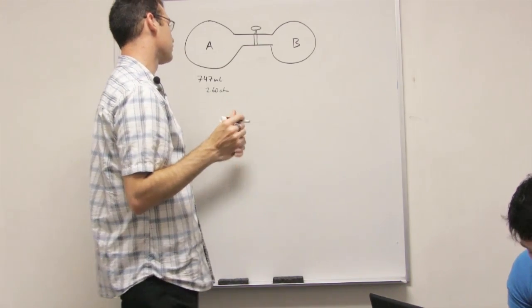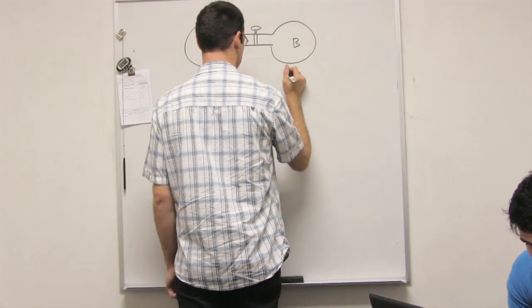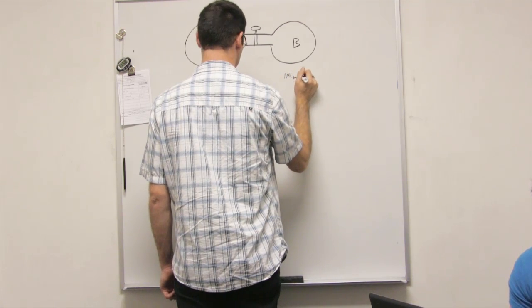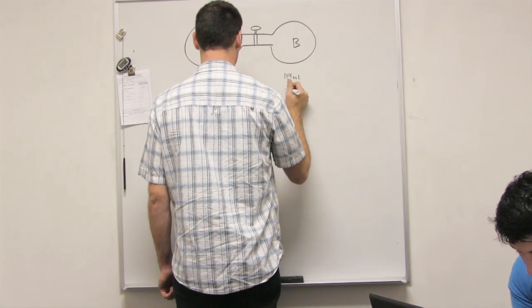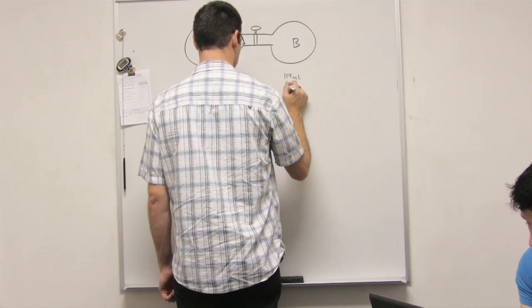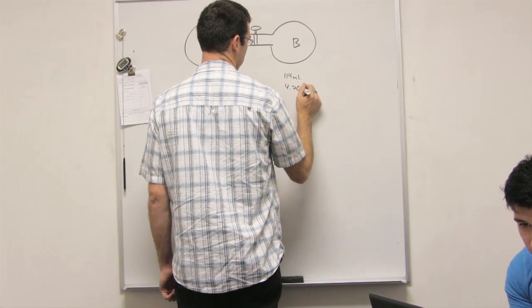Container B holds 114 milliliters of ideal gas at 4.70 atm. This one is at 3 and this one will be at 2 because this one has higher pressure.